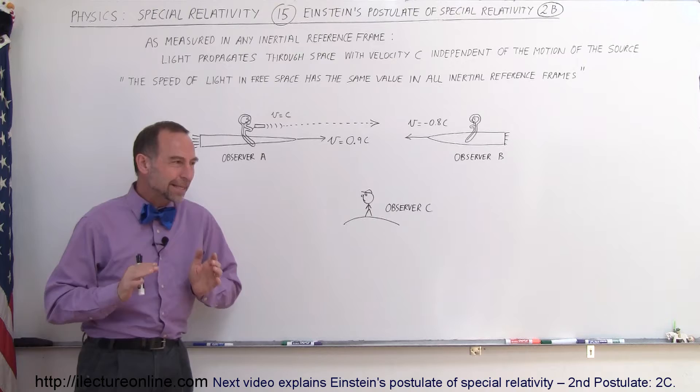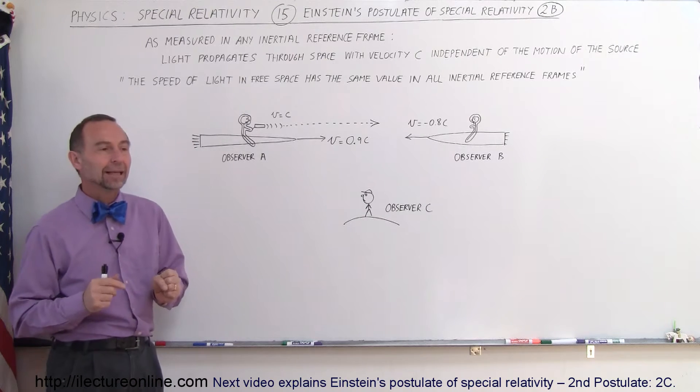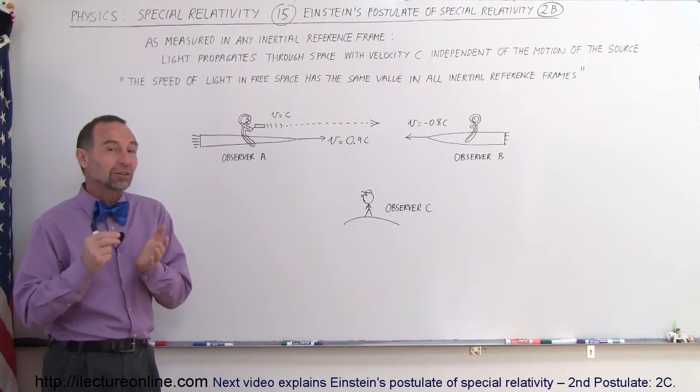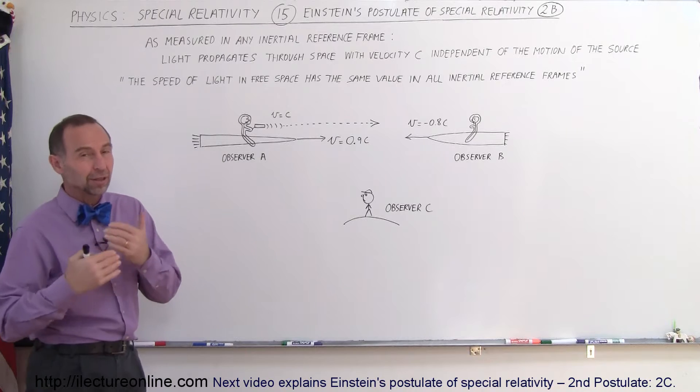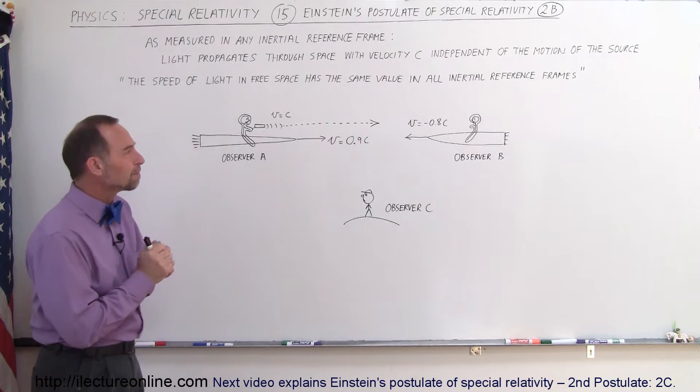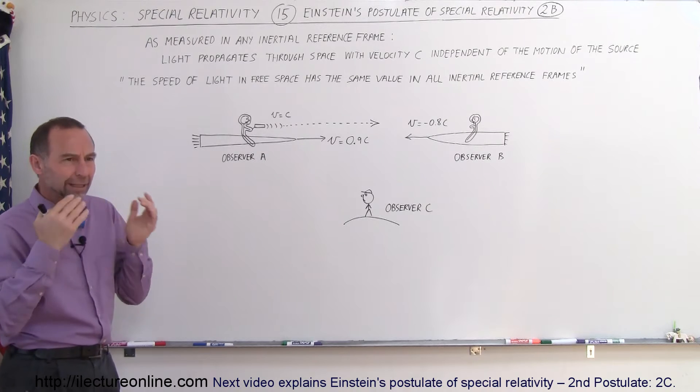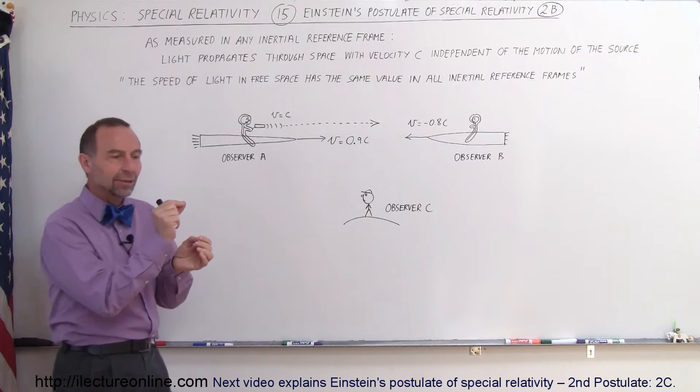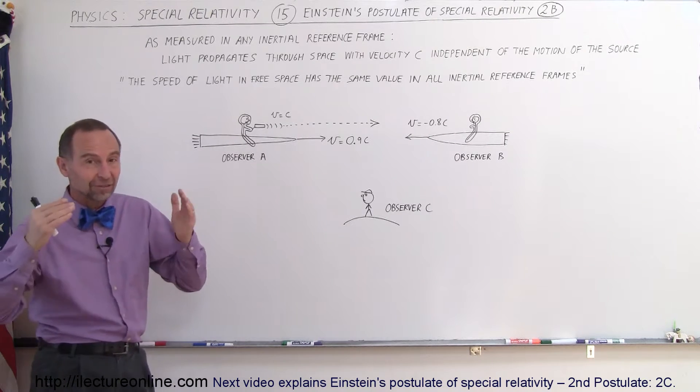At this point, people said yeah, we can probably accept that. Maxwell already proved that the speed of light has to do with the permeability of free space and also the permittivity of free space. So therefore, people would kind of hang on to the idea that yes, I can see where light would move through space at a fixed value.